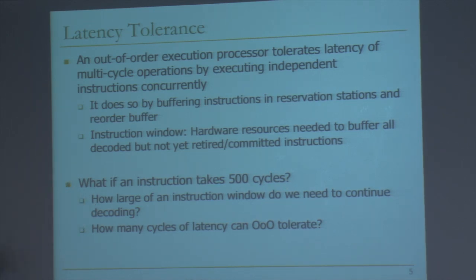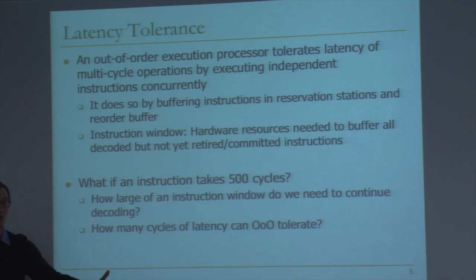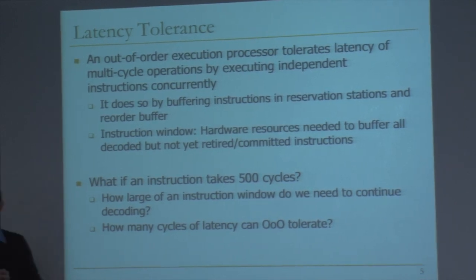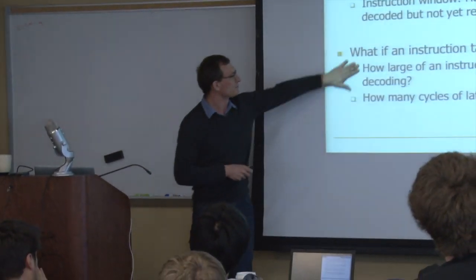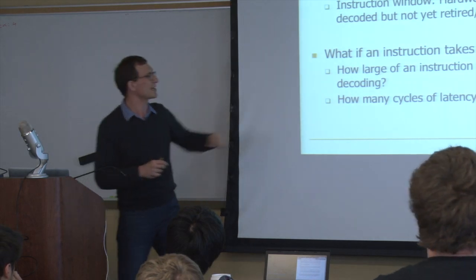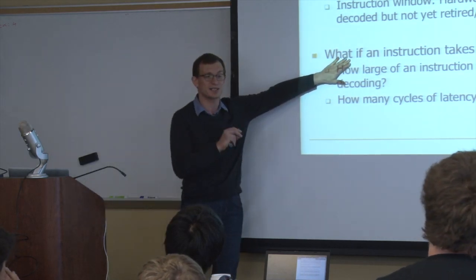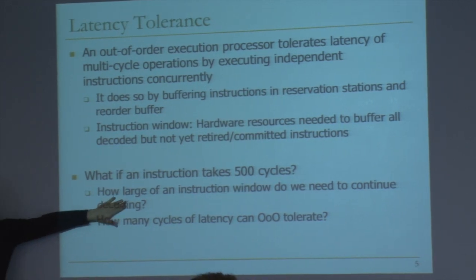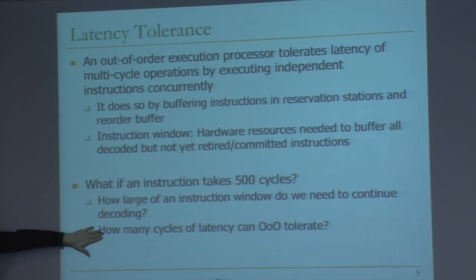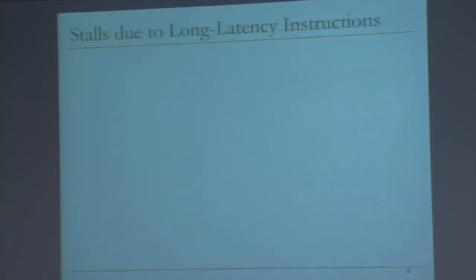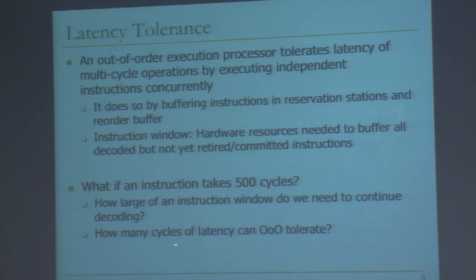The problem is instructions that have long latencies. If an instruction takes a long time to execute, you need a large instruction window so that the machine doesn't stall. If an instruction takes 500 cycles to service — and in today's systems, instructions take very long if they need to access memory (in an old Xbox, latencies were over 600 processor cycles to access main memory) — you need a large instruction window. If you're superscalar fetching four instructions per cycle and one instruction takes 500 cycles, you need a 2,000-entry window to not stall at all.